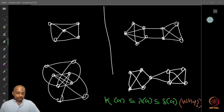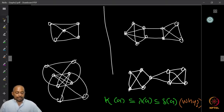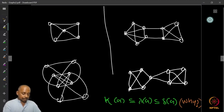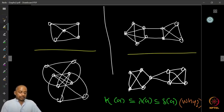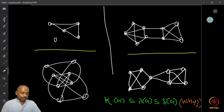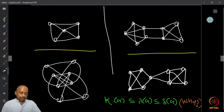Here is another set of examples on edge connectivity. If you look at the first graph, it is 3-edge-connected because I cannot remove just two edges to make the graph disconnected, but I can remove three edges to disconnect it. So it is 3-edge-connected.